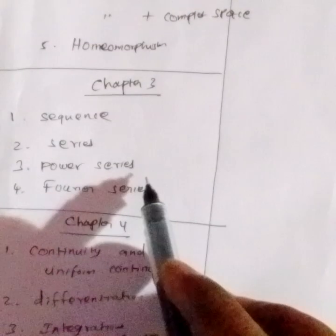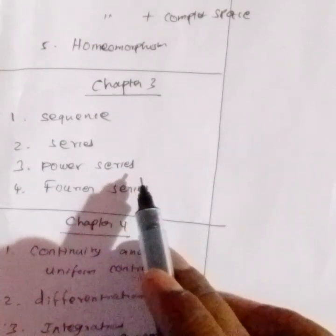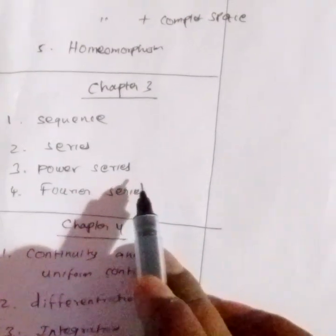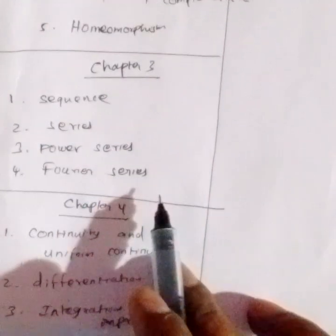Next: power series — the series is the same way, looking at convergence — and Fourier series.